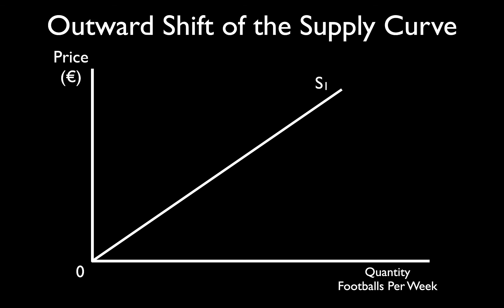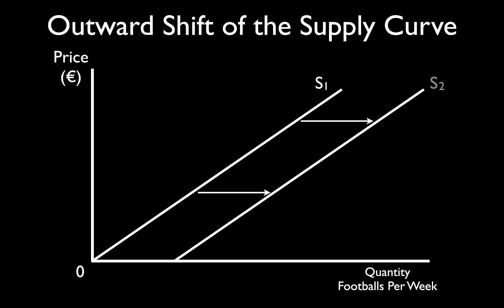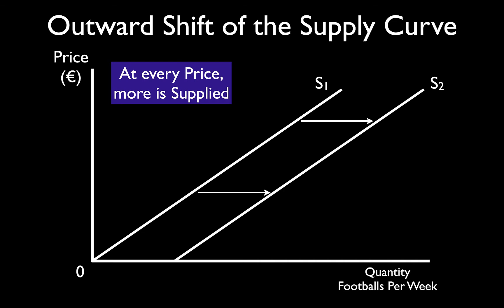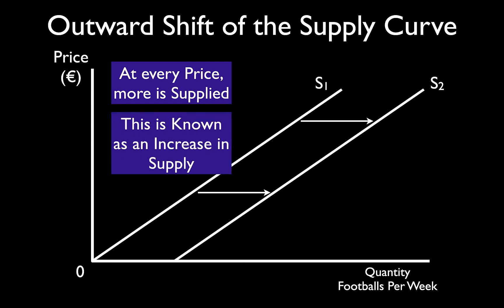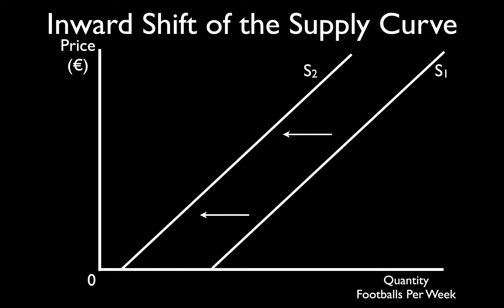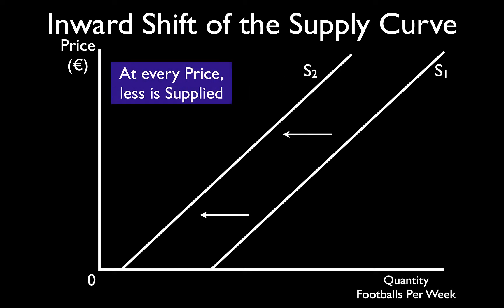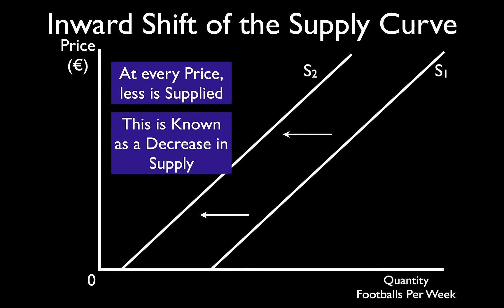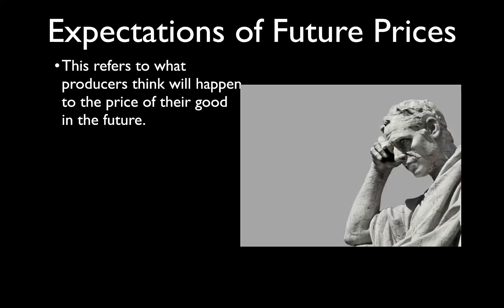What do shifts look like? An outward shift in the supply curve means the entire supply curve moves outwards and to the right. This means that at every price more is supplied, and this is known as an increase in supply — not an increase in quantity supplied. An inward shift means the entire supply curve shifts inwards and to the left; at every price less is supplied, and this is known as a decrease in supply.